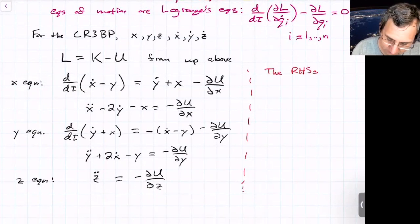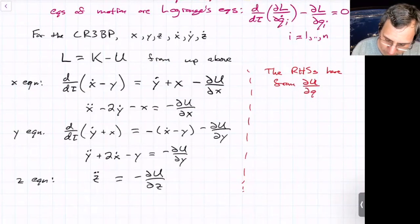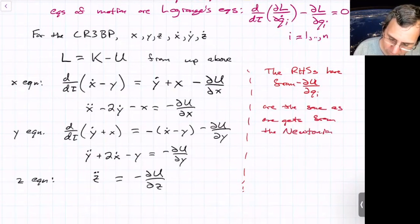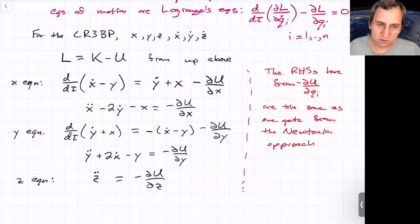So just to reiterate, the right hand sides here, partial u, partial qi, negative partial u are the same. If you just take the partial derivative, they're the same as one gets from the Newtonian approach. But it's just a lot quicker.